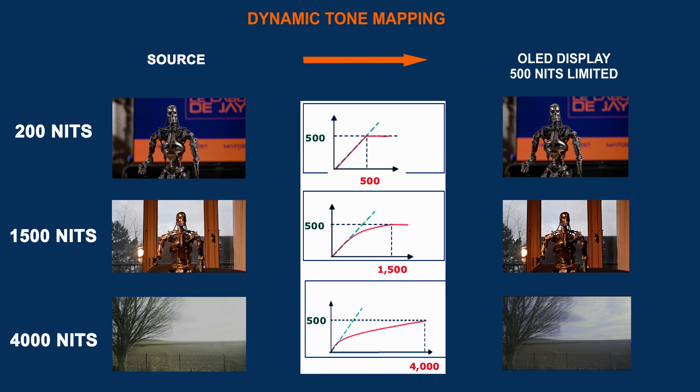Every display device uses different algorithms to do the tone mapping, which means that from one device to another the signal is not treated the same way. Some will do a better job in the control of highlights, some will burn the highlights, some will reduce the whole image. There are as many treatments as there are different processors. Concretely, an HDR10 image with static metadata displayed on three different HDR10 TV sets will very likely produce three totally different images.